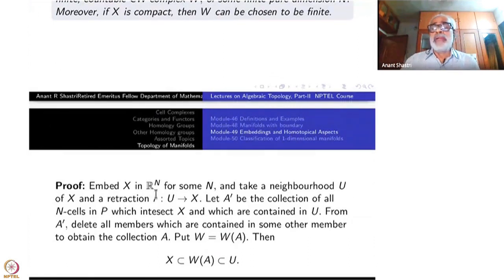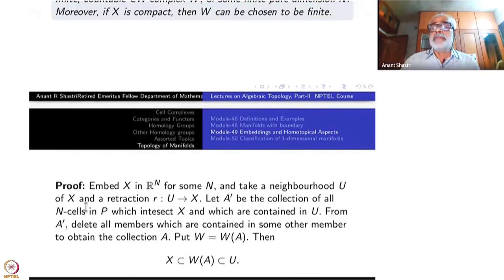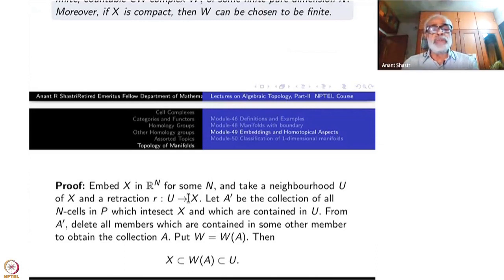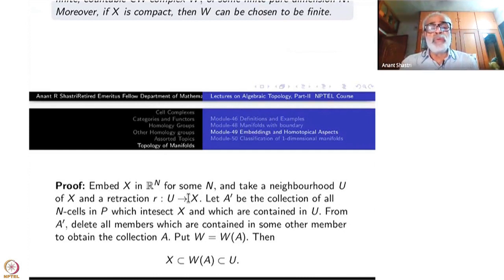This is the basic theorem that we can derive from what we have done previously. Start with an embedding of X in R^N for some N. Take a neighborhood U of X and a retraction R from U to X. This is what the earlier theorem allows us — we are only using a weaker version of that theorem: there is a neighborhood and a retraction. That is all I am using here.